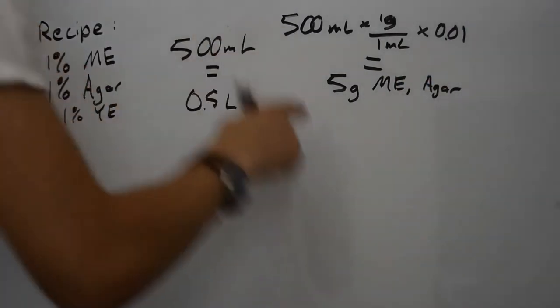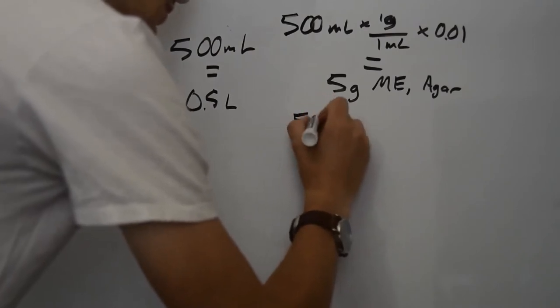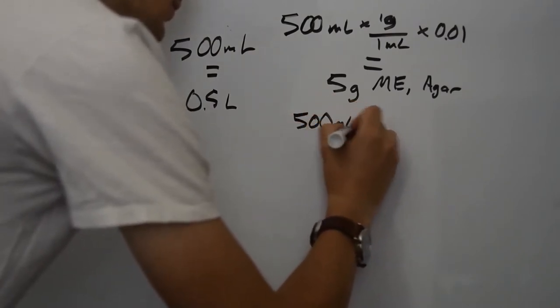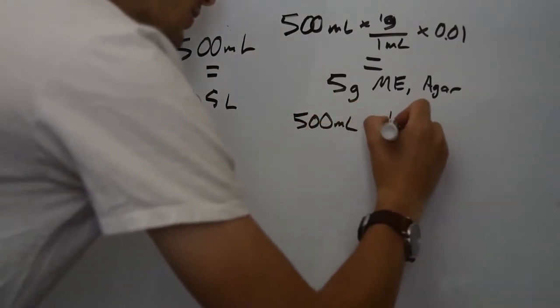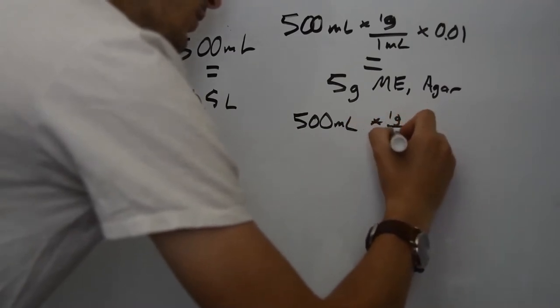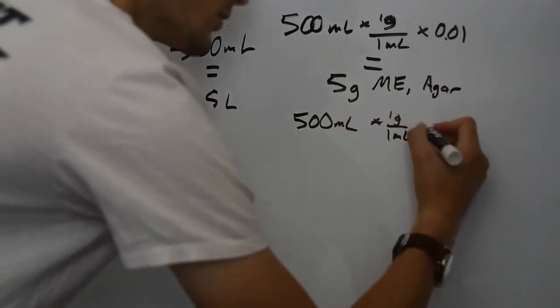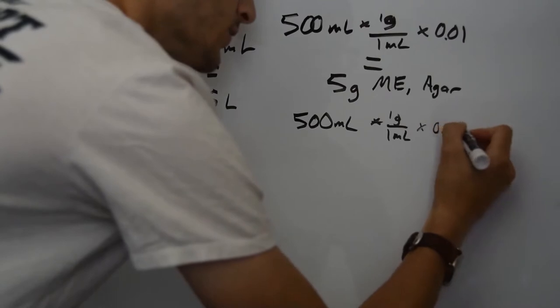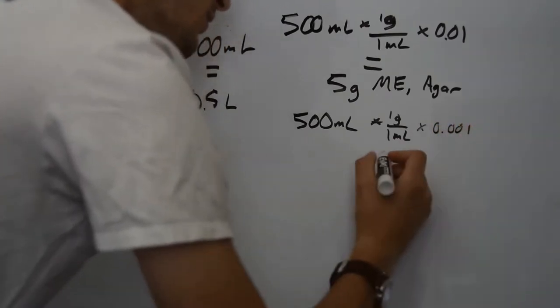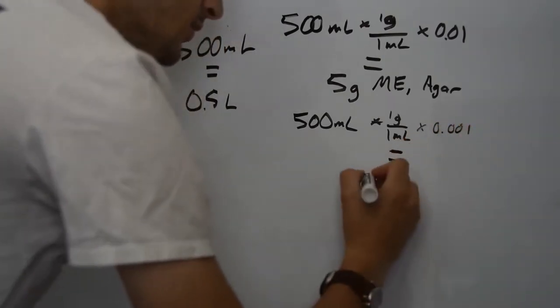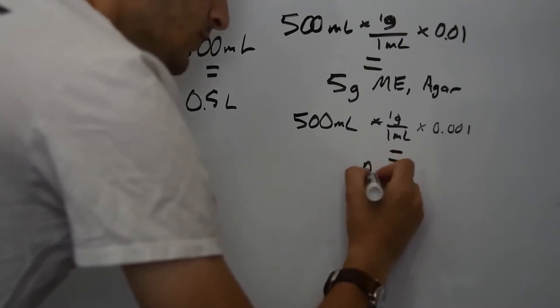We can use the same conversion for the yeast extract but by multiplying by a different proportion. This gives us 0.5 grams of yeast extract.